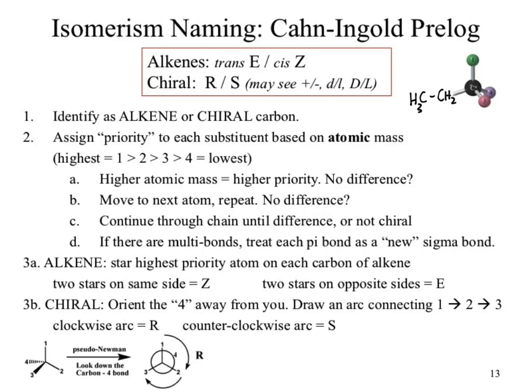What if you encounter something like a multiple bond? Multiple bonds are nasty confusing because we treat each pi bond as a new sigma bond, adding ghost atoms into the structure. For alkenes it's a bit easier: star the highest priority atom on each side of the double bond. If my two stars are on the same side, it's Z; if they're on opposite sides, it's E. For chiral atoms, I have to orient the molecule so that priority 4 — the lowest priority — is aimed away from me. Once that's done, I draw an arc connecting 1 to 2 to 3: clockwise is R, counterclockwise is S.